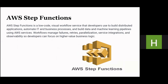Next is the AWS Step Function — a low-code visual workflow service that developers can use to automate IT work, build business processes, and build data and machine learning pipelines. It handles workflow failures, retries, and parallelization, service integration, and observability, so developers can focus on their business logic.